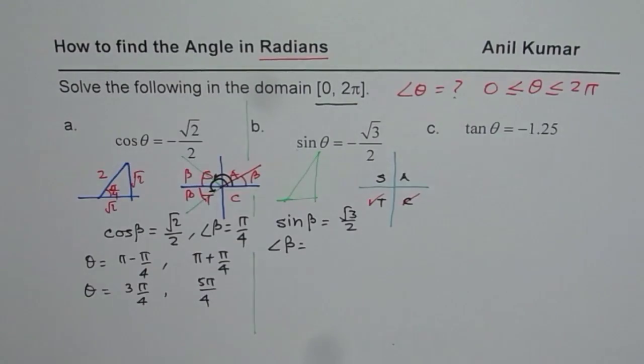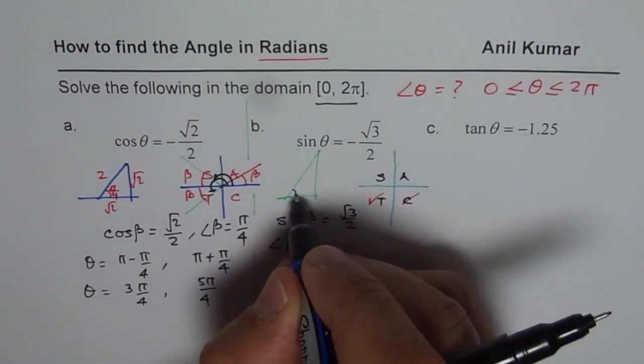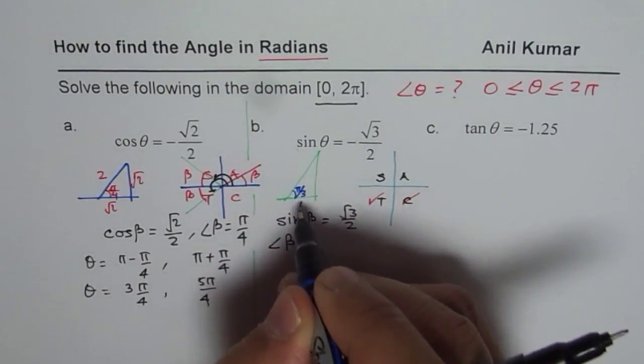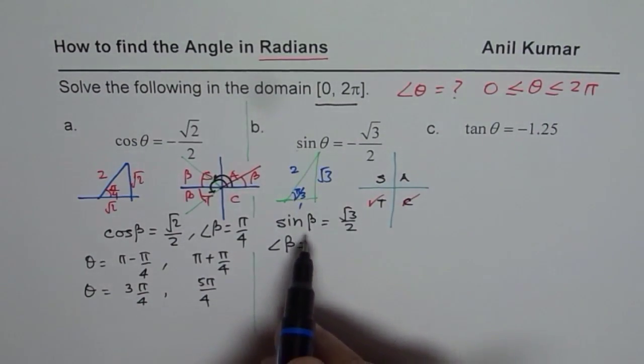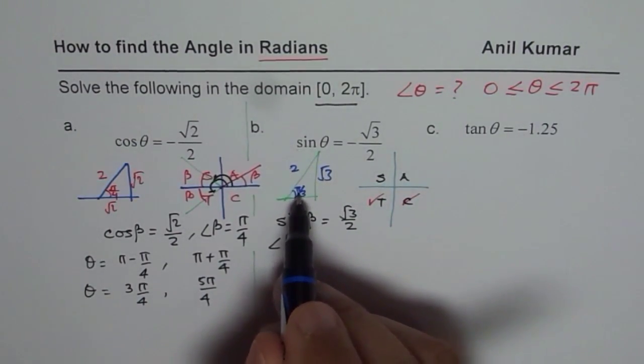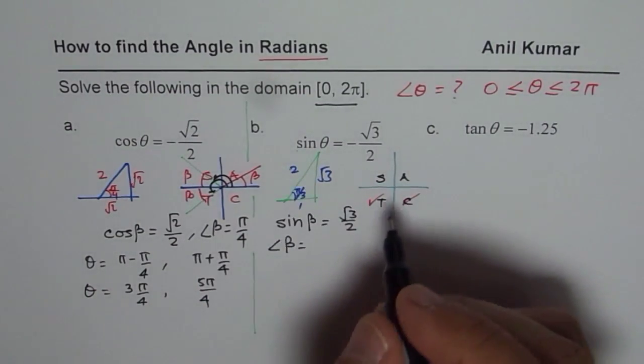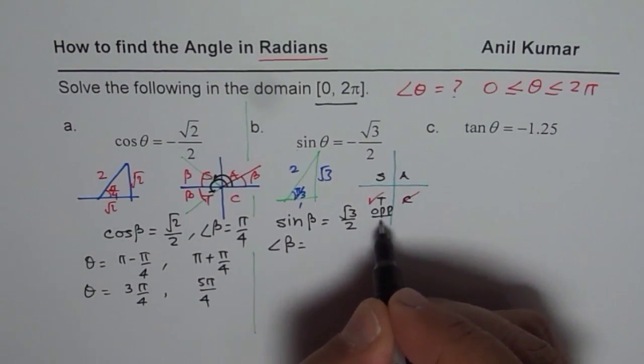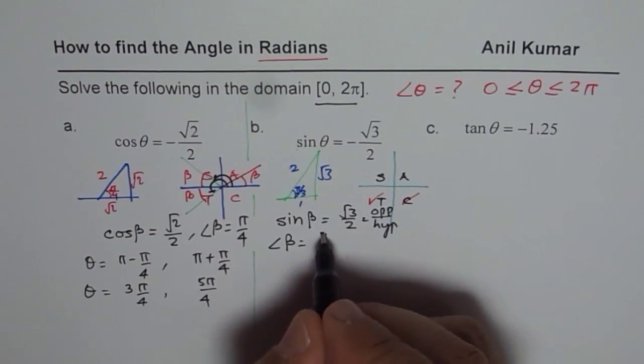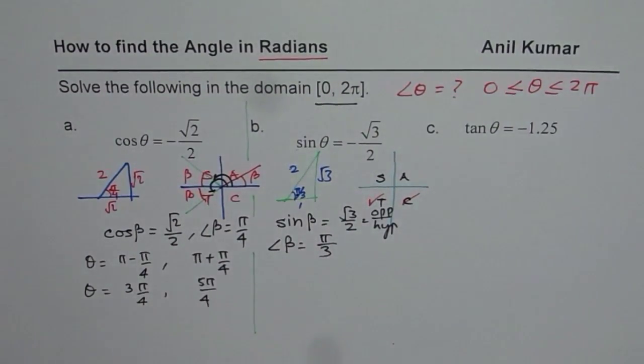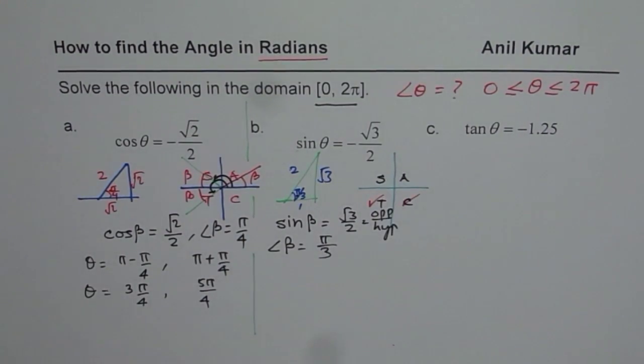Let me again sketch a special triangle here which will help us to find the answer. This is π/3, 1, 2, √3. √3/2 means we are looking for that angle, opposite over hypotenuse. From the angle π/3 it is opposite, so β is π/3.